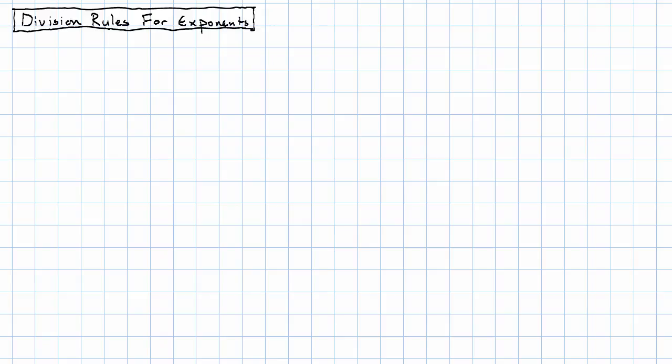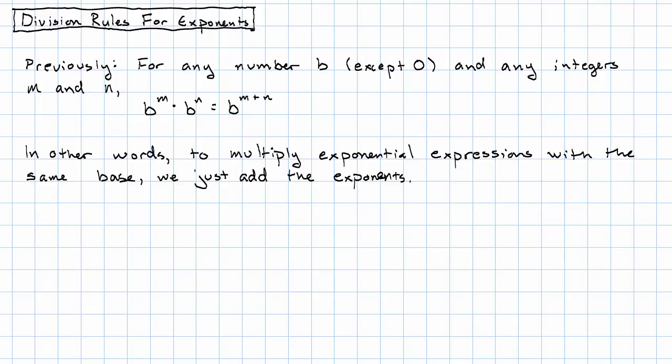Now, remember that previously we had the following rule. For any number b that is not zero, and any integers m and n, b to the m times b to the n is b to the m plus n. In other words, in order to multiply exponential expressions with the same base, we just add the exponents.